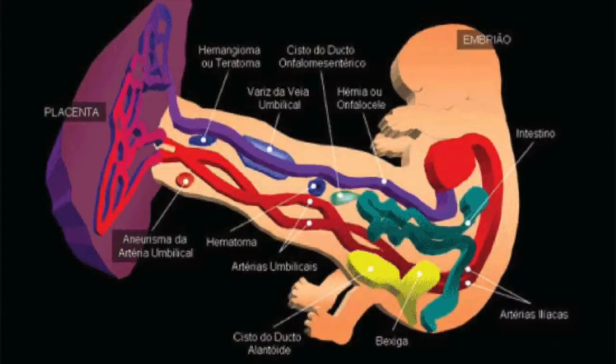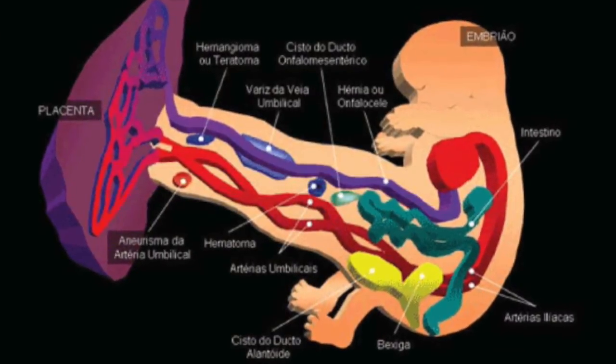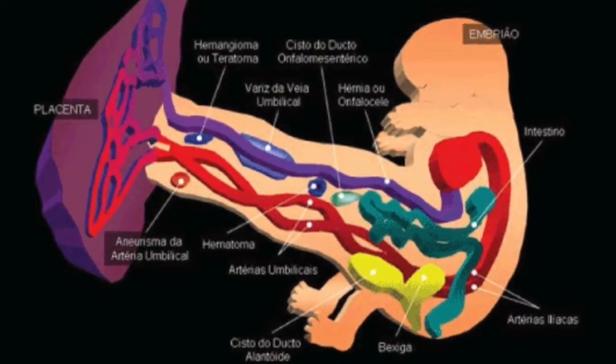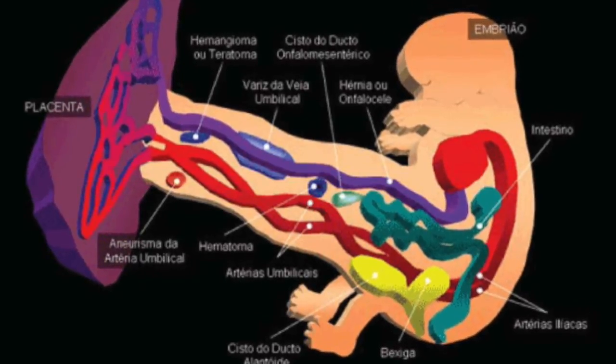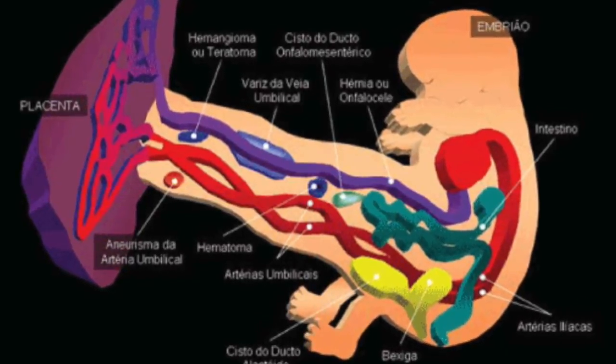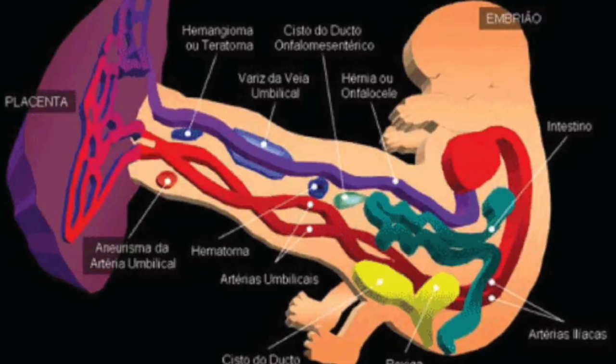The umbilical cord carries nutrients and oxygen from the mother's blood to the embryo. It also carries the embryo's waste back to the mother, who can then excrete them into her urine.